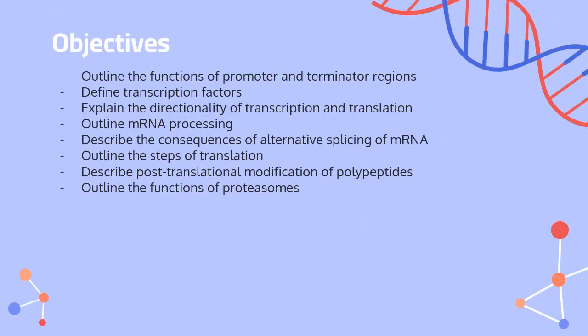Our objectives: we're going to outline the functions of promoter and terminator regions. We're going to talk about transcription factors and the directionality of transcription and translation. We're going to outline the processing of messenger RNA, including the consequences of alternative splicing. We'll go through the steps of translation, talk about post-translational modifications of polypeptides formed during translation, and then talk about the functions of proteasomes.